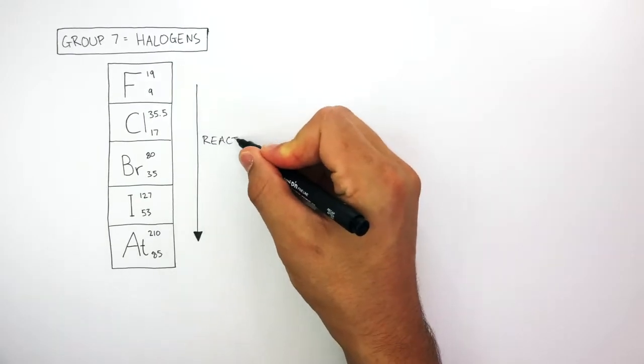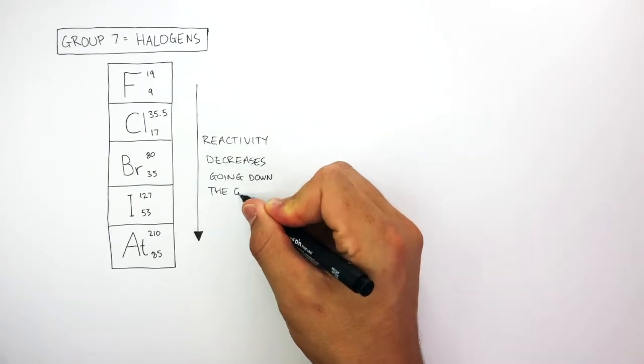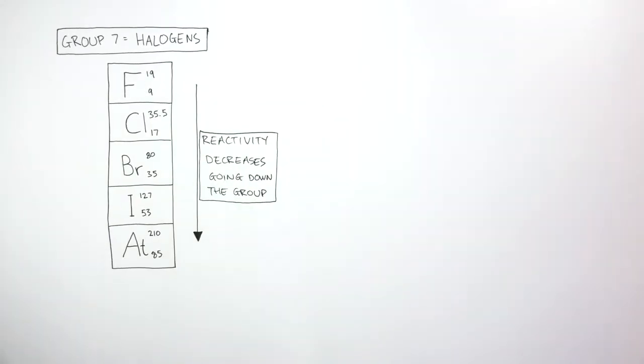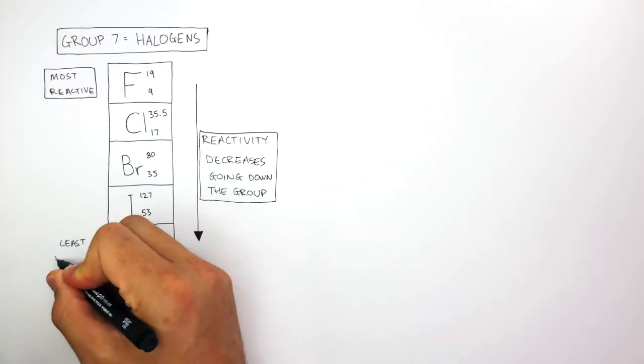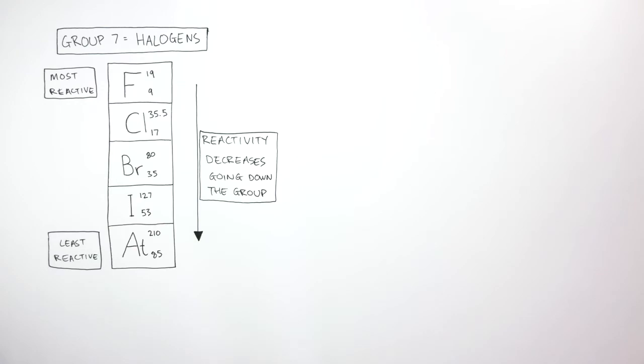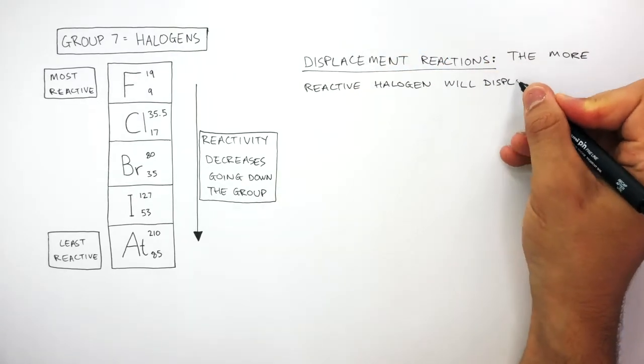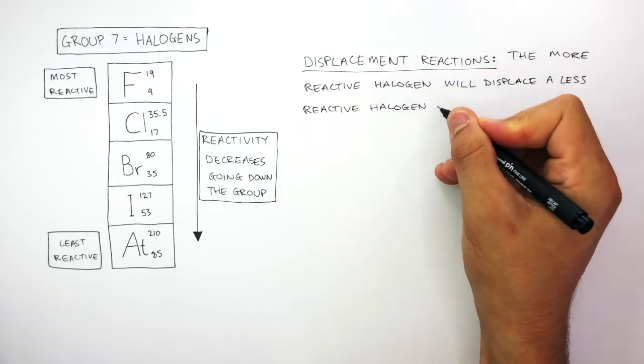This arrow shows how reactivity decreases going down the group. Fluorine is the most reactive halogen and astatine is the least reactive. In the context of halogens, displacement reactions occur when the more reactive halogen displaces a less reactive halogen from the salt.